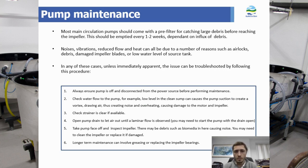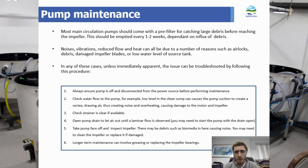Most main circulation pumps should have a pre-filter for catching large debris before reaching the impeller. This should be emptied every two weeks at minimum, but possibly every week depending on the influx of debris or your application. Issues with the pump can be spotted through noises, vibrations, reduced flow, and heat coming from the pump. This can be for a number of reasons such as an airlock within the pump or system, debris in the housing, damaged impeller blades, or low water levels of the source tank — such as if you're drawing from the biofilter sump, a reduced level will cause cavitation to occur. In either case, you can follow this troubleshooting procedure. Each pump will have its own procedure, which is a general guideline.